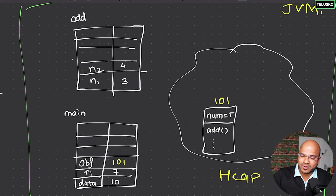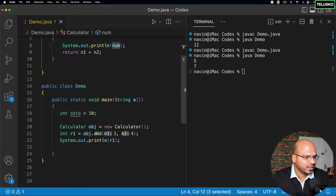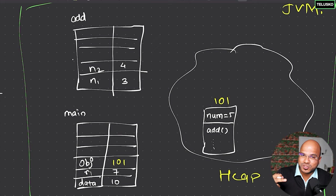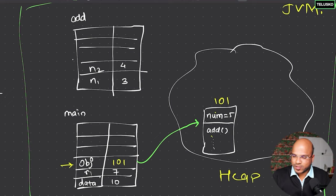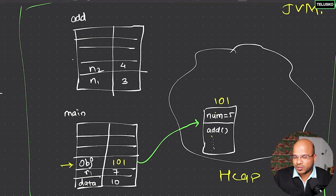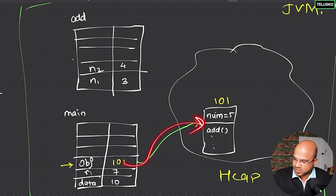Every time you say obj.add, execution starts from the stack. You look up obj, get the address 101, jump to the heap object, and call the add method. So there is a link between stack and heap because of the address. That's why you can use this object multiple times. In the future we'll talk about anonymous objects and why this link is important, but for now: every time you say obj.add, you go from main stack, jump to the heap to look for the object.